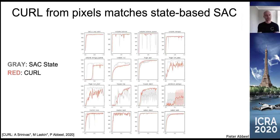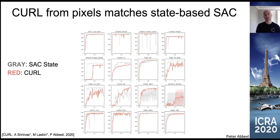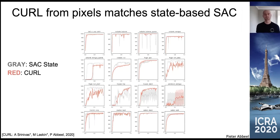Here are our main results: learning curves where the horizontal axis is experience collected, the vertical axis is reward — higher is better. In gray is what happens when the agent learns from state; in red, only from pixels. The very surprising result — at least when we first saw it — is that the red curve almost always keeps up with the gray curve, showing that learning from pixels can actually be as efficient as learning from state in most tasks in the DeepMind Control Suite.